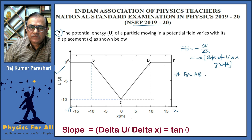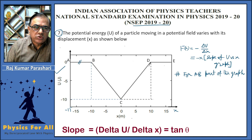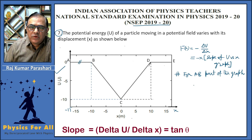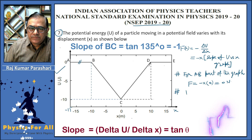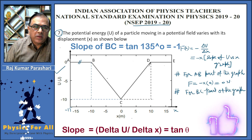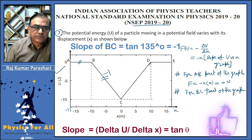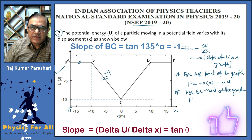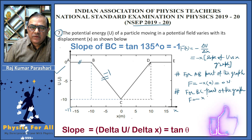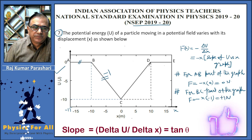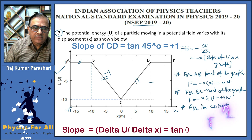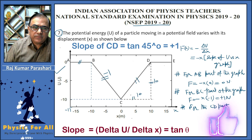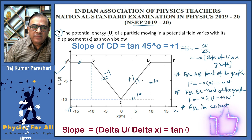For the AB part of the graph, the slope is zero, and hence force is also equal to zero newtons. For the BC part of the graph, the slope is minus one, and hence the value of force equals minus times minus one, which is plus one newton. For the CD part, the slope is plus one.